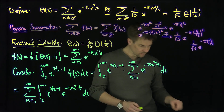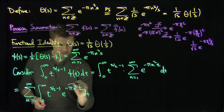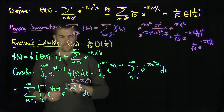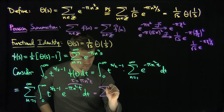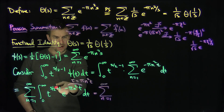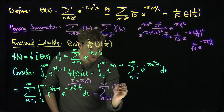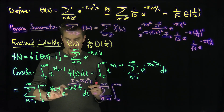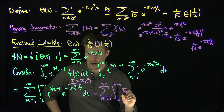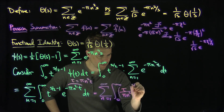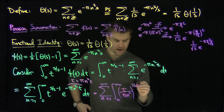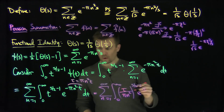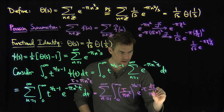We're going to define a new variable. Let tau equal pi n squared t. When t equals 0, tau equals 0; when t equals infinity, tau equals infinity, so the limits of integration don't change. Then t to the s over 2 minus 1 becomes tau over pi n squared to the s over 2 minus 1, and e to the negative pi n squared t becomes e to the negative tau. The dt becomes d tau over pi n squared.